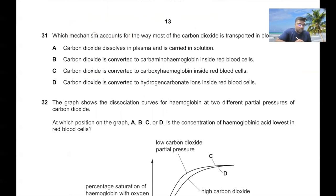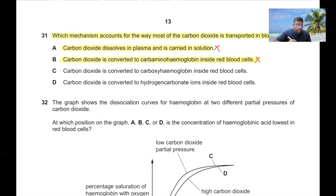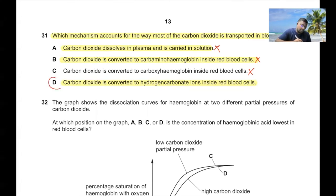Question 31: Which mechanism accounts for how most carbon dioxide is transported in blood? Not dissolved in plasma, not as carbaminohaemoglobin (only ~10%). Carbon dioxide cannot be converted to carboxyhaemoglobin. Most CO₂ is converted to hydrogencarbonate ions inside red blood cells. Option D is the correct answer.